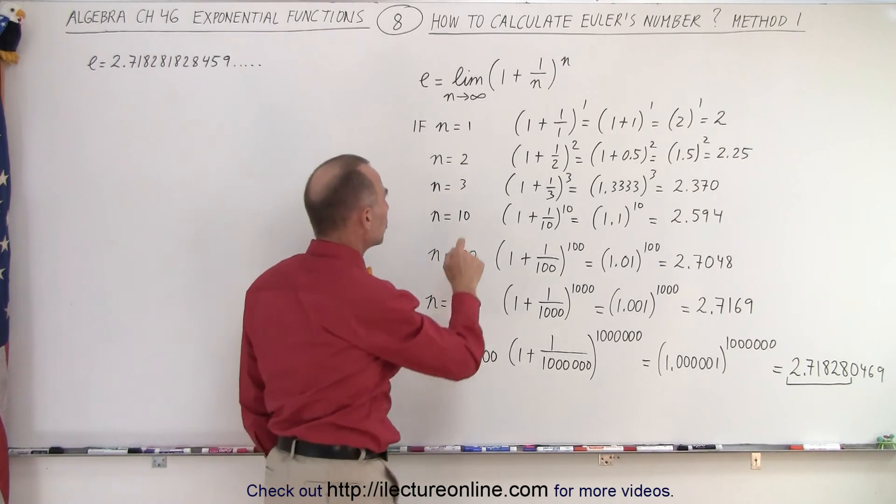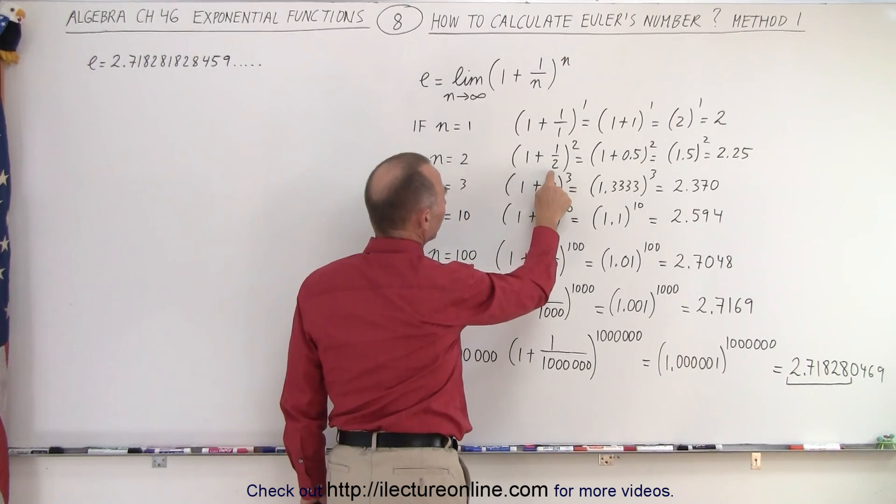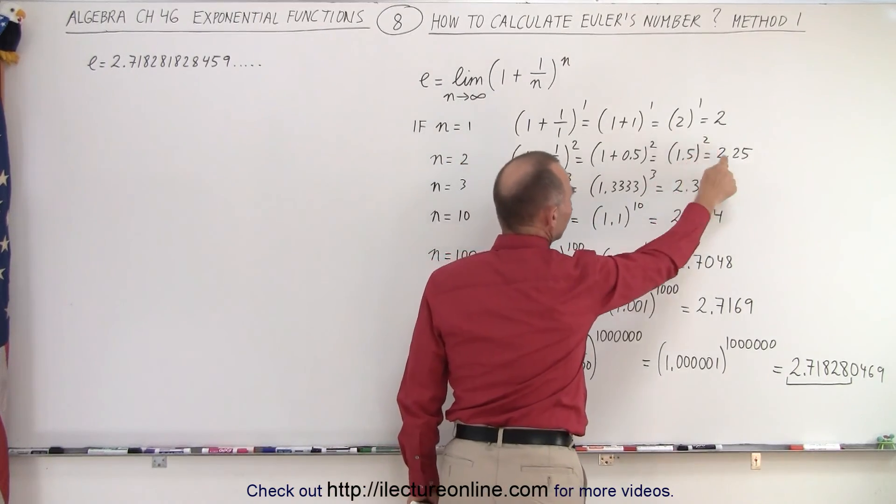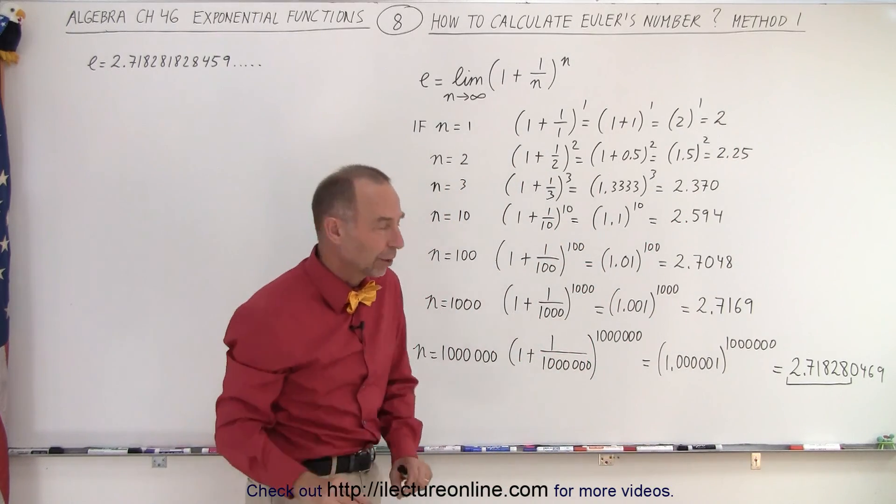But what if n equals 2? Well, when we replace n equals 2, this becomes a 2, that becomes a 2. Now we get 1.5 to the second power, which is 2.25. You can see we're a little bit closer.